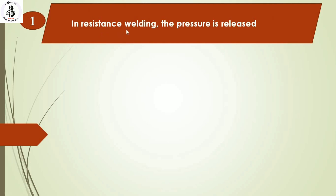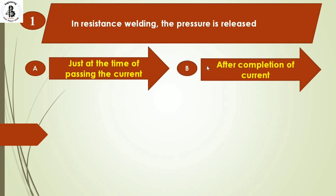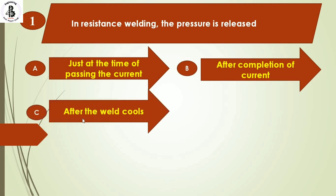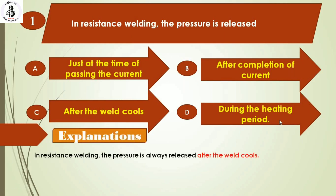In resistance welding, the pressure is released. Option A: just at the time of passing the current. Option B: after completion of current. Option C: after the weld cools. Option D: during the heating period. In resistance welding, the pressure is always released after the weld cools, then you move to a second spot or location. So the answer is option C: after the weld cools.